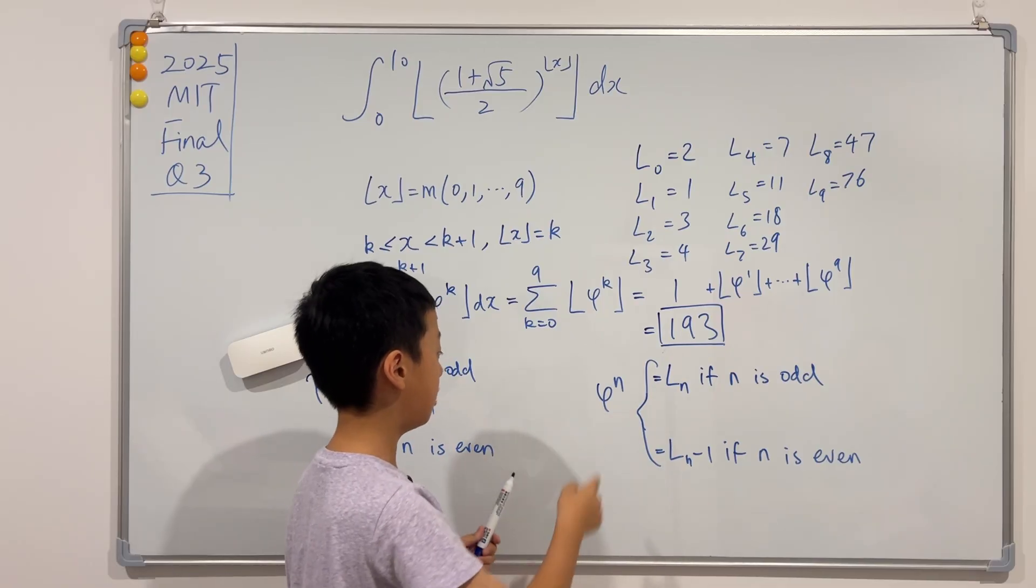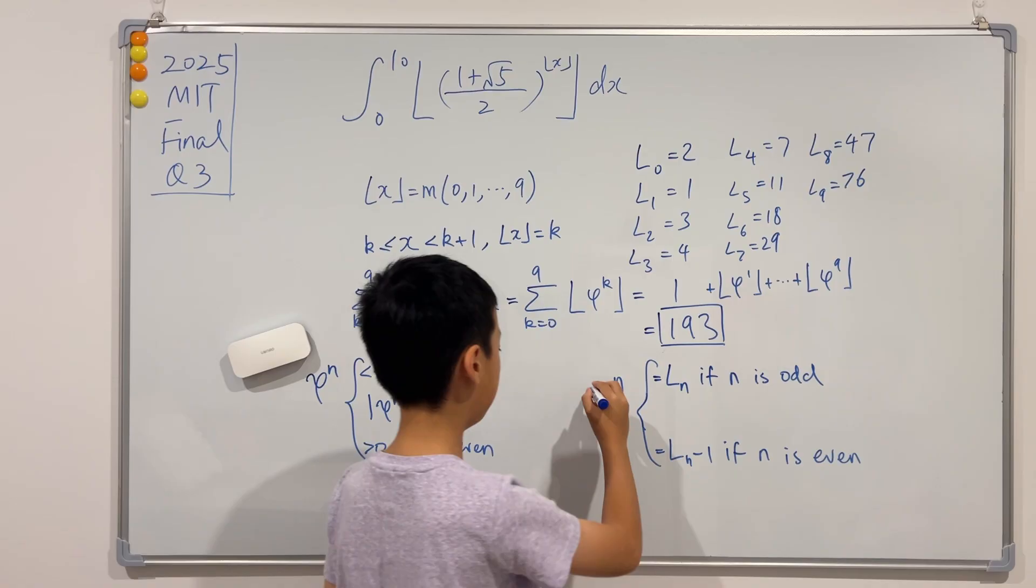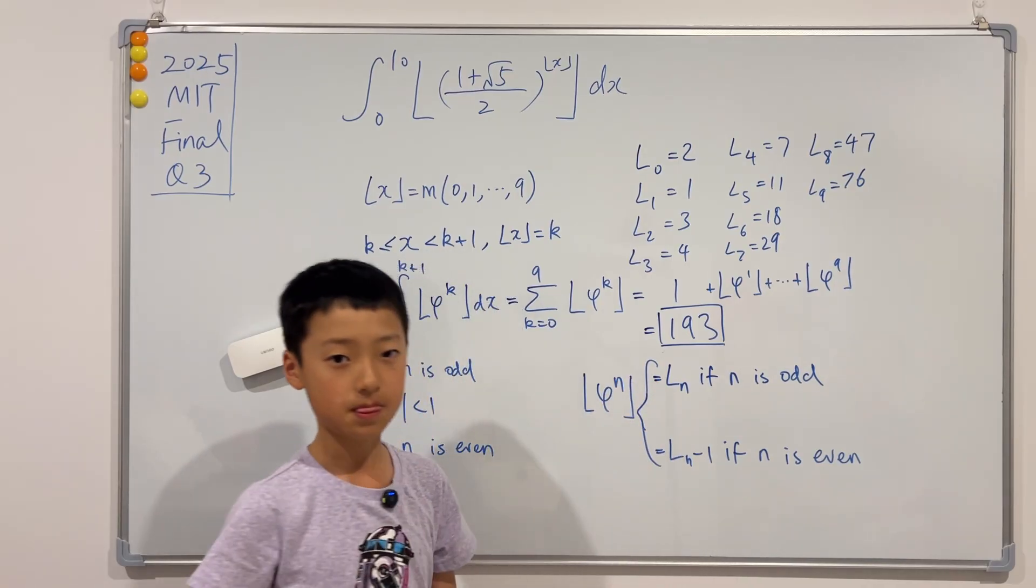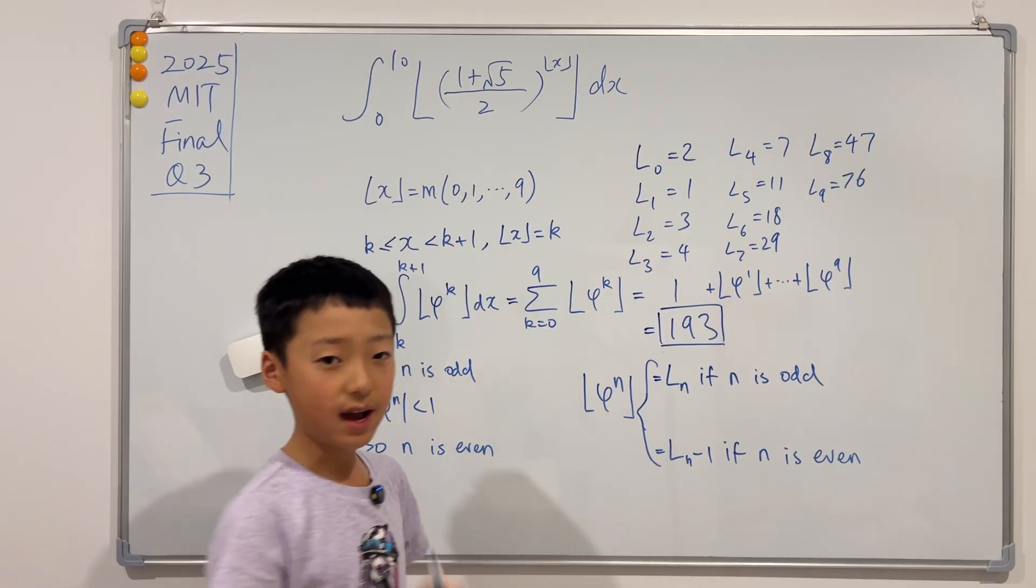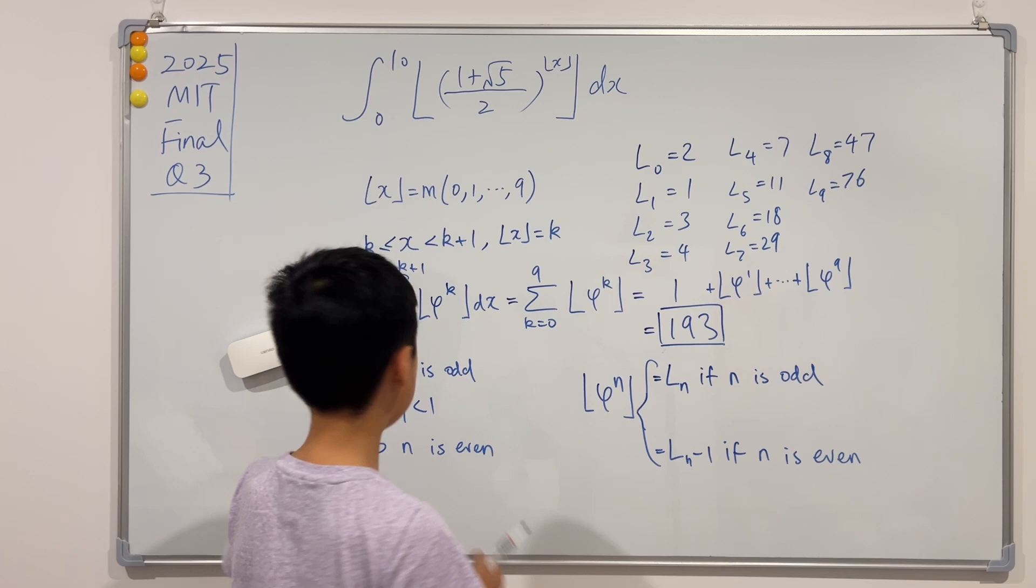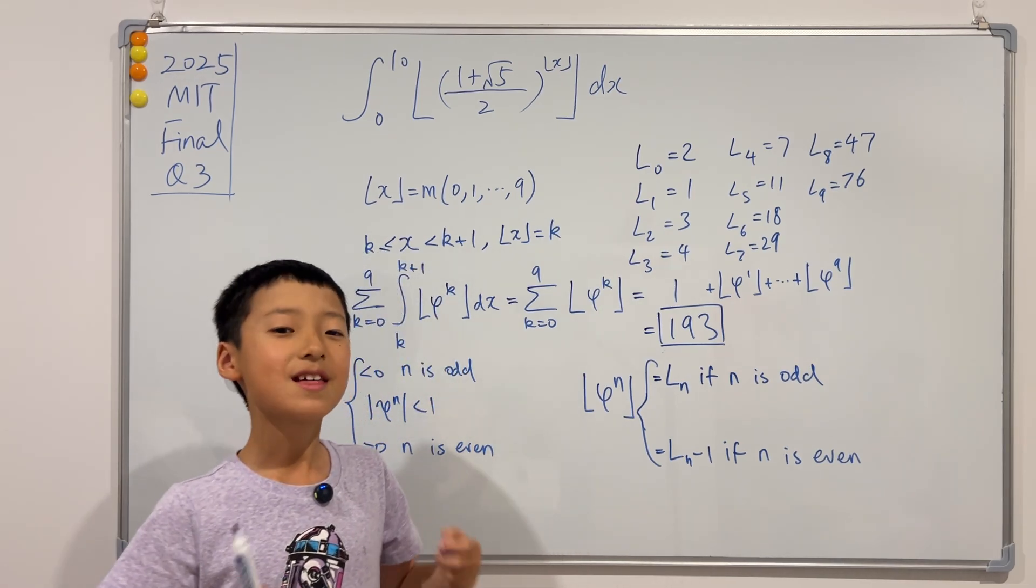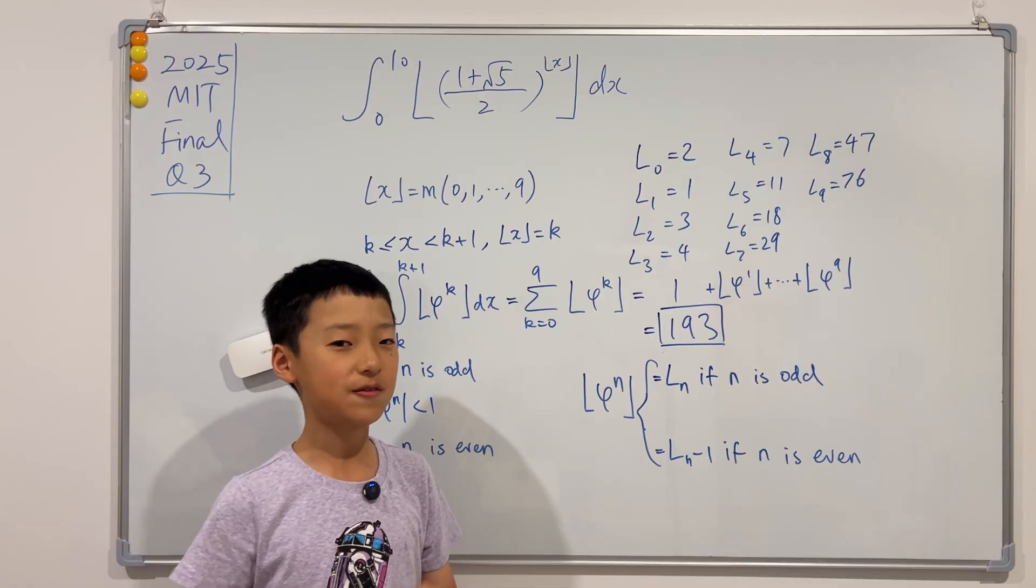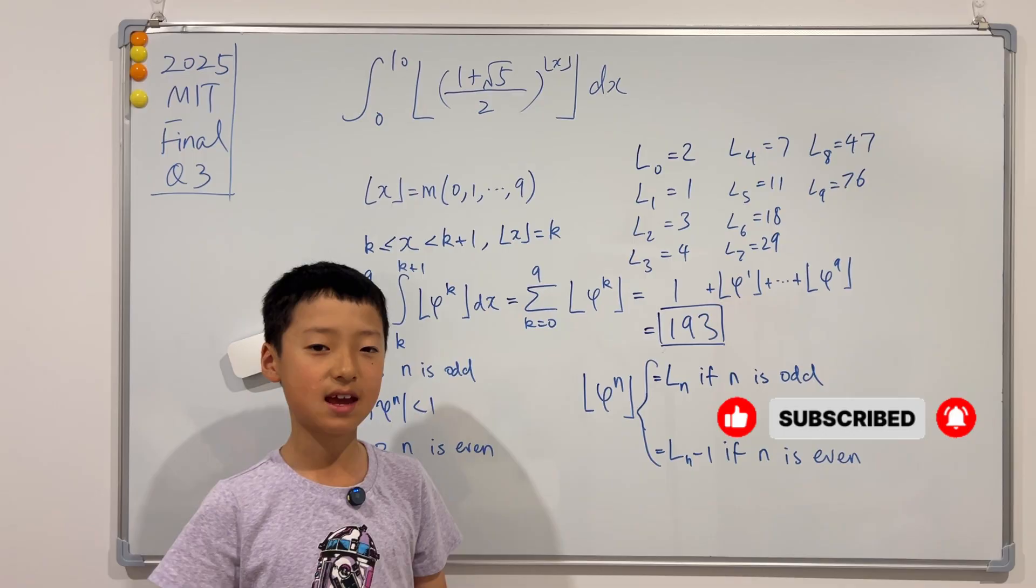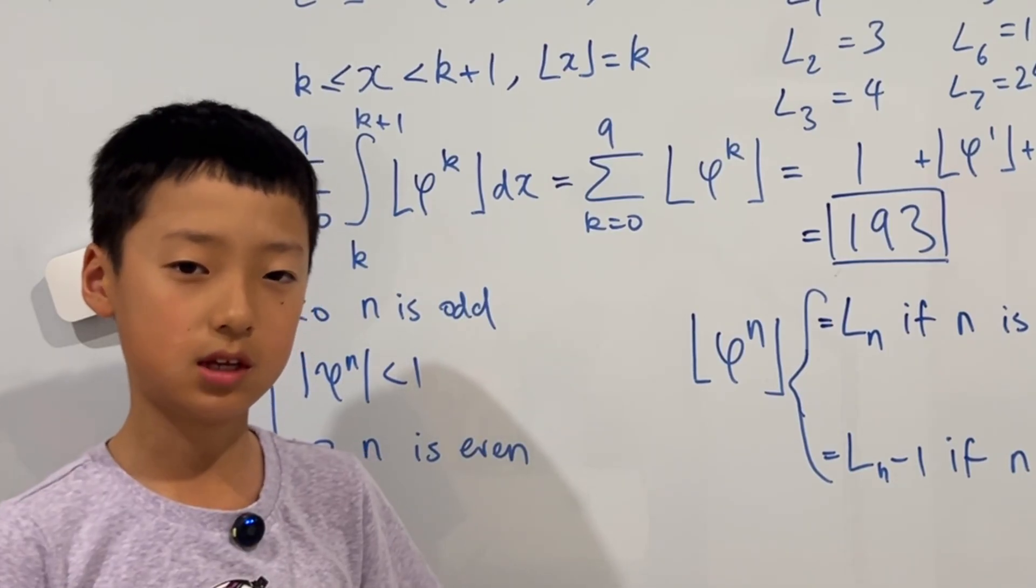This is actually not the properties of phi to the n—it is actually the properties of the floor of phi to the n. So this is the final answer of the 2025 MIT integration B final question 3. Thank you guys so much for watching, and if you enjoyed my video and you want more videos like this, please consider liking and subscribing. If you want to master something, teach it.